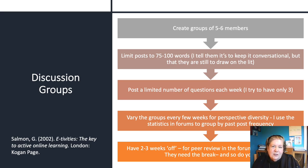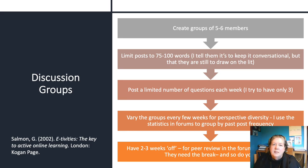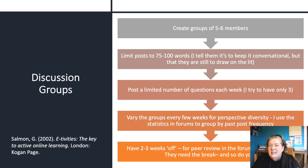I try to have only a limited number of questions each week — ideally two, never more than three. If I have something really critical that needs more than three questions, I'll give them a choice of doing A or B. Students have appreciated moving the groups around week to week. From time to time I'll look at the statistics function in Sakai and rebalance the groups so one group doesn't end up with all the frequent posters. I typically leave groups static for about three weeks and then switch them up.